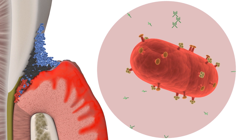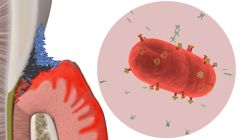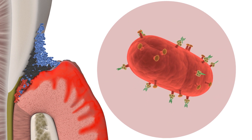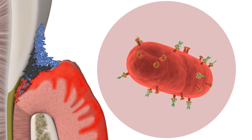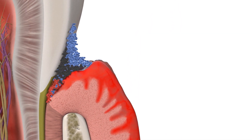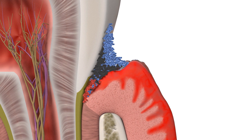These antibodies block or neutralise the key virulence molecules of Porphyromonas gingivalis and the accessory pathogens, in effect nullifying their ability to cause disease. This neutralisation allows the commensal bacteria in the plaque to out-compete the disease-associated bacteria.